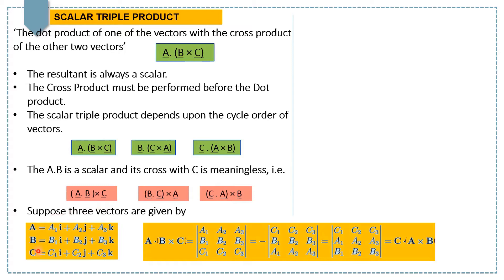Suppose we have three vectors having components in the direction of each unit vectors i, j, k respectively. Then A dot B cross C can be written in the form of a determinant having three rows. The first row consists of components of vector A, the second consists of components of vector B, and the third consists of components of vector C.